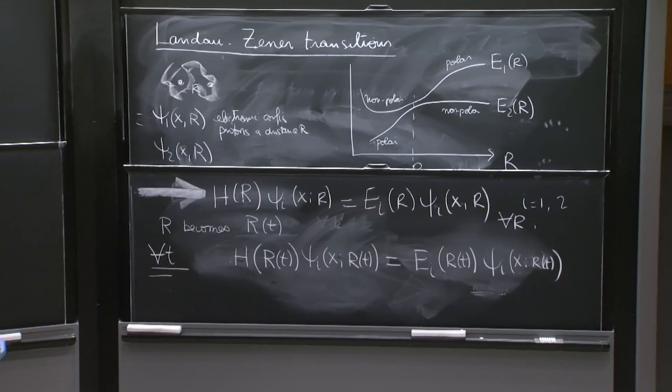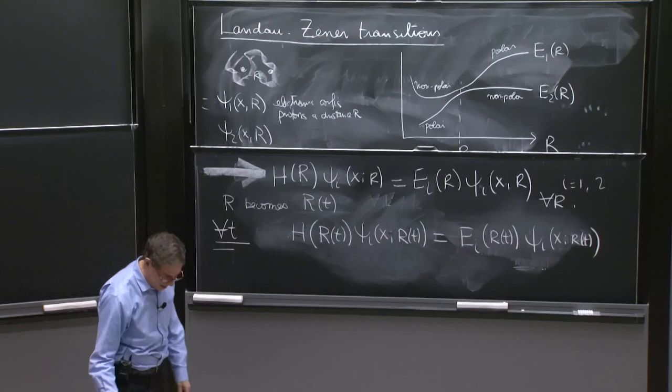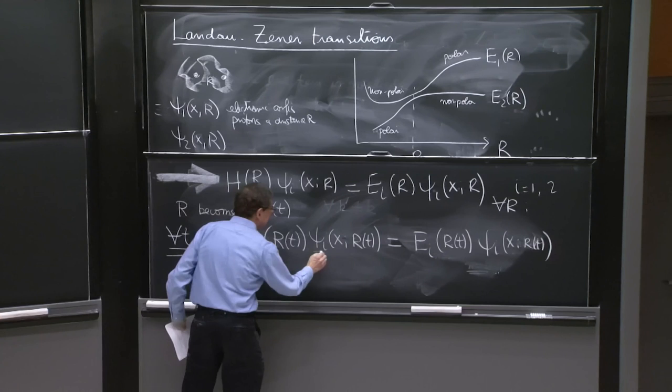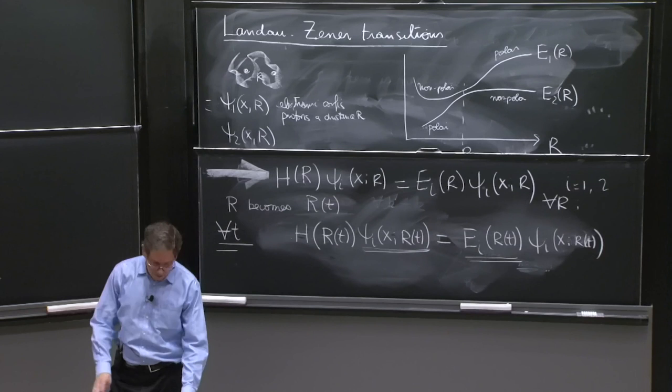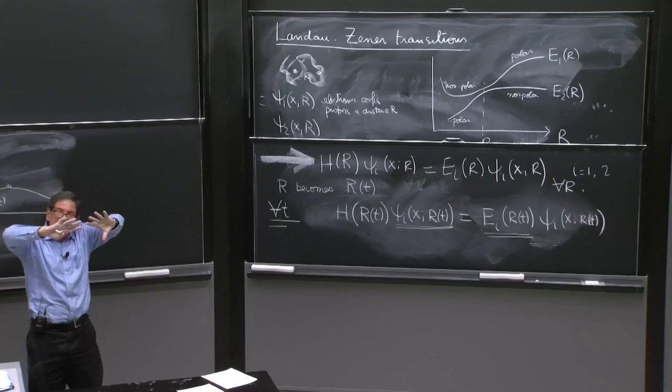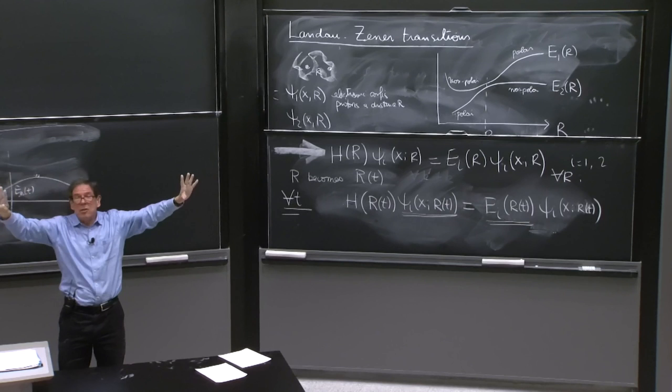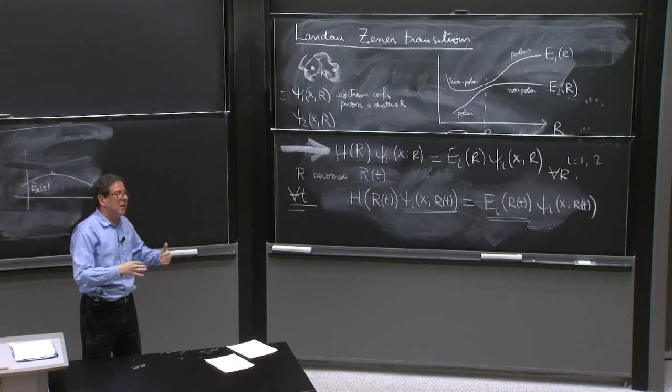Because if this is true for any value of this letter r, then this is true for all times. Because for any specific time, this is the r. The same r is here. The same r is here. And the same r is here. And that equation holds for all r. So if this can be solved for all r, this holds for all times. And you have your instantaneous energy eigenstates. You have found those instantaneous energy eigenstates. And therefore, the instantaneous energy eigenstates are these ones. And the instantaneous energies are these ones.